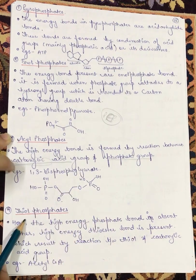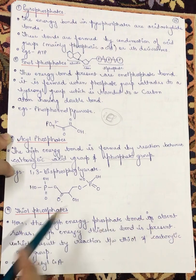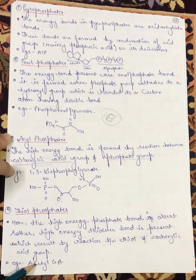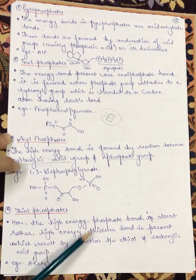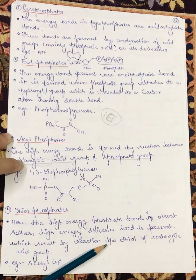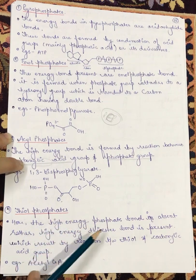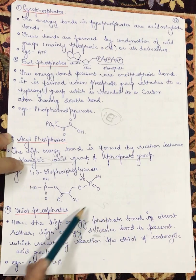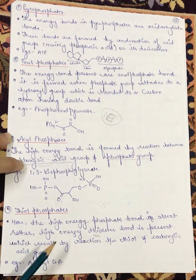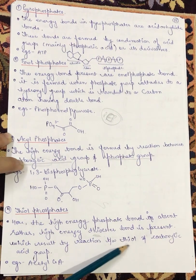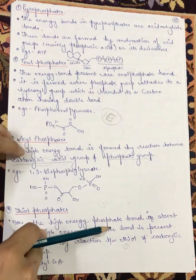Next we have thiol esters. In this group, the high-energy phosphate bond is absent. Rather, a high-energy thioester bond is present, which results from the reaction between a thiol group and a carboxyl acid group. An example is acetyl coenzyme A.